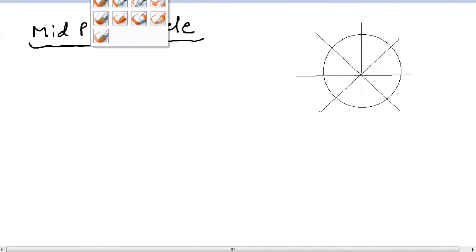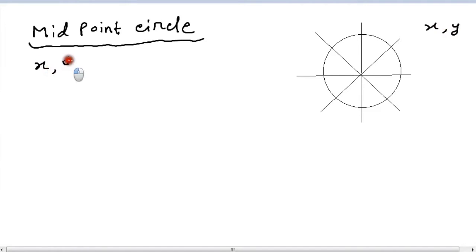Suppose we have a point on the circle, x, where's my pen? x, y, okay? Maybe I can write it over here, x, y. Anyway, so we have two values, x, y, which represents a point on the circle.